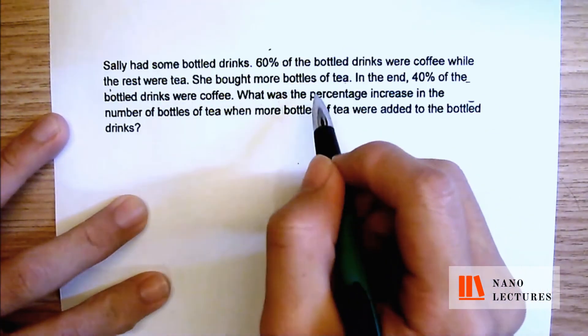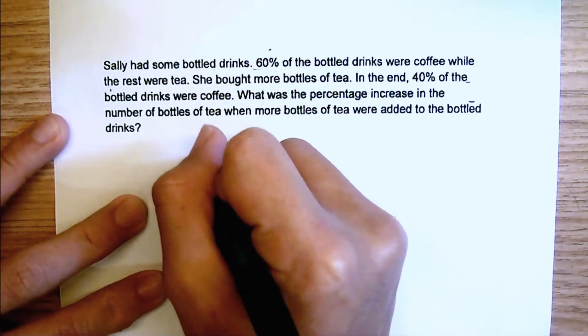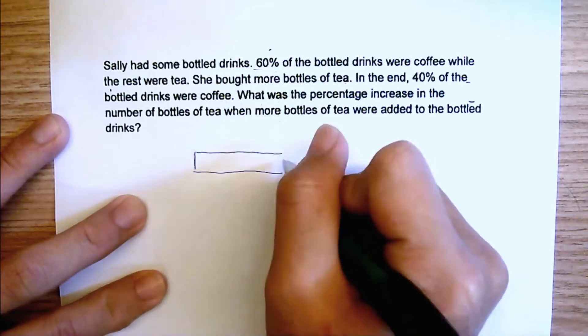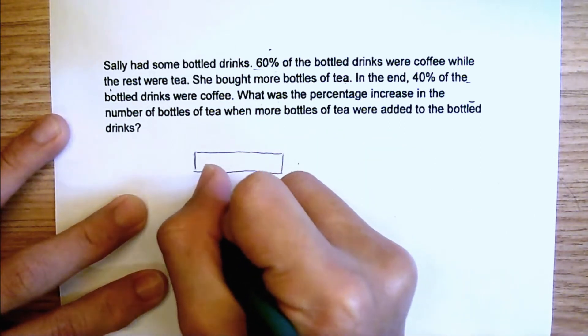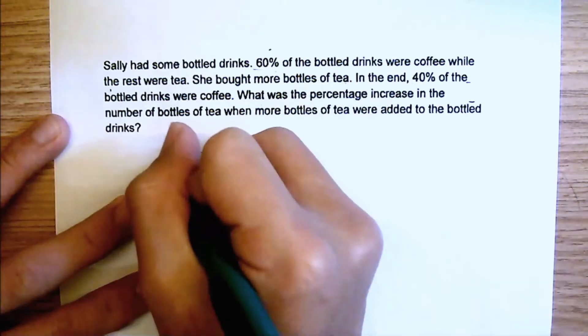Okay, originally, this is a before and after, right? Originally, they are 60%, so I'm just going to draw 60% first. I'm going to draw a comparison bar, which is just top and bottom. So this 60% and this one will be 40%, and the 60% were coffee and the rest were tea.